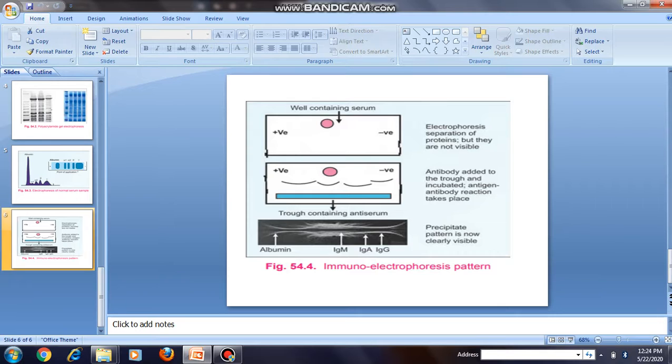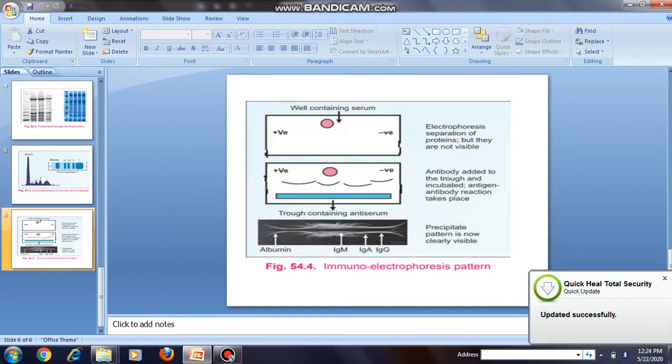The next type of supporting media is polyacrylamide gel, which is known as polyacrylamide gel electrophoresis. In short, it is known as PAGE. Polyacrylamide gel has a high molecular sieving effect, so separation is very efficient. In agar gel, we get 5 fractions of the protein, while in polyacrylamide gel electrophoresis serum shows more than 20 different bands.